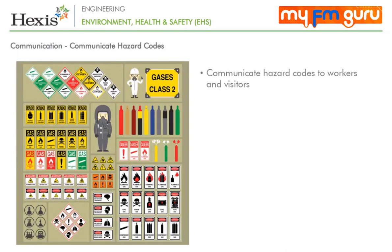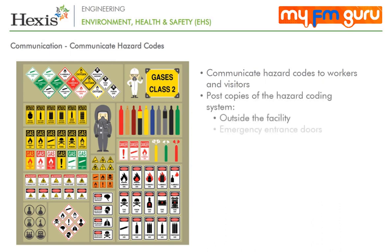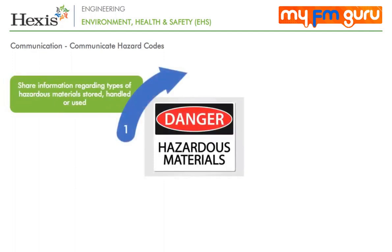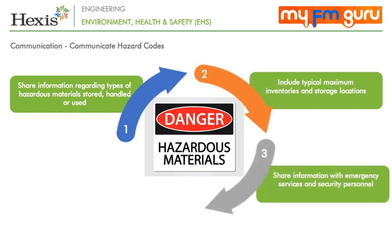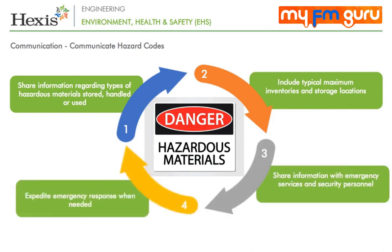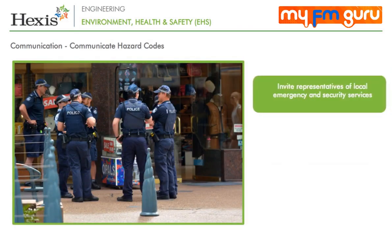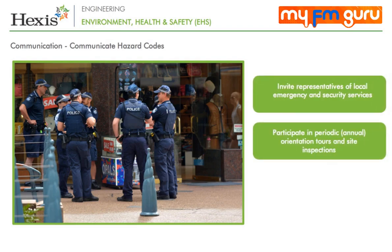Communicating hazard codes to workers and visitors is necessary. Copies of the hazard coding system should be posted outside the facility at emergency entrance doors and fire emergency connection systems. Information regarding types of hazardous materials stored, handled or used at the facility, including typical maximum inventories and storage locations, should be shared proactively with emergency services and security personnel. Representatives of local emergency and security services should be invited to participate in periodic annual orientation tours and site inspections to ensure familiarity with potential hazards.